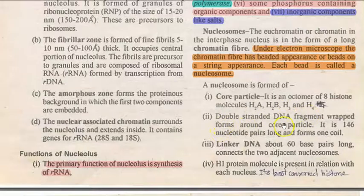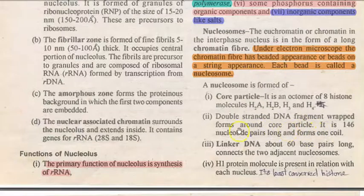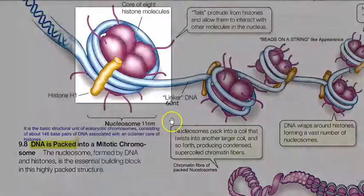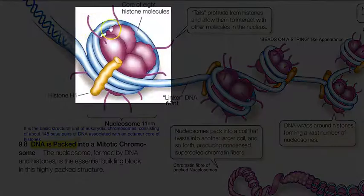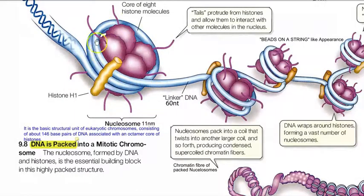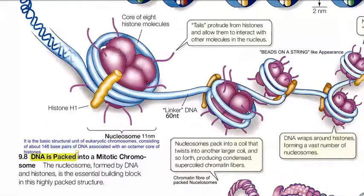A double-stranded DNA fragment is wrapped around the core particle made up of histones. This DNA fragment is 146 base pairs long and forms one coil wound around the core of 8 histone molecules.